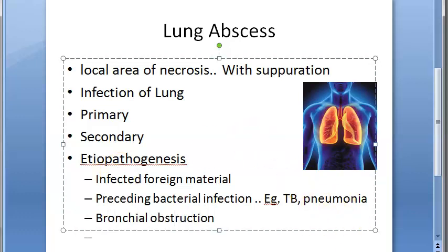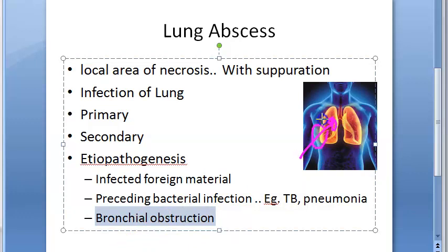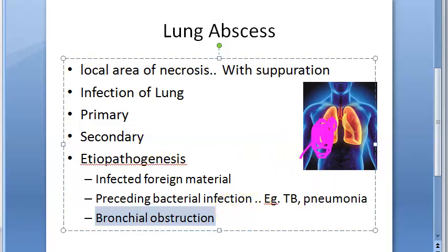The third etiology is bronchial obstruction. When there is obstruction, an abscess may form distal to the obstructed bronchus. The obstruction can be a foreign body or even a tumor. Distal to the obstruction, the lung tissue is not receiving proper supply, so it may develop into an abscess. This can further lead to bronchiectasis as well.